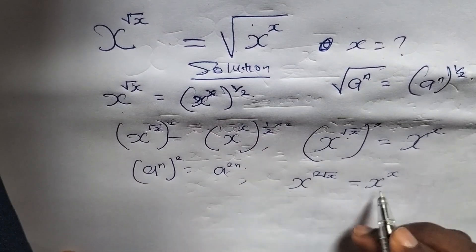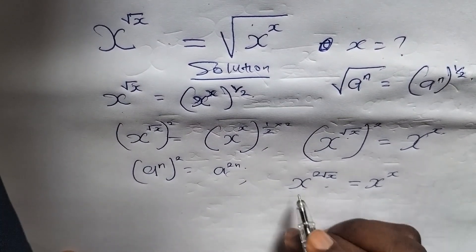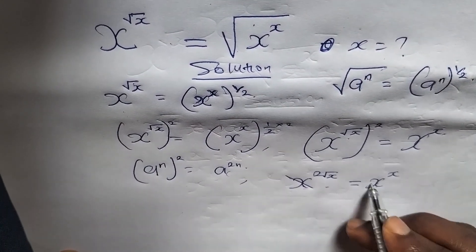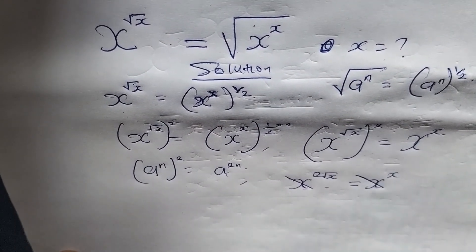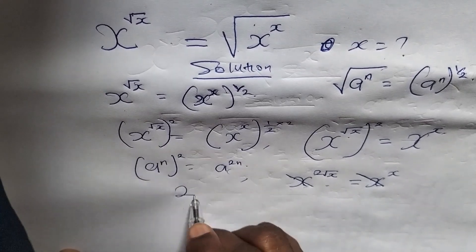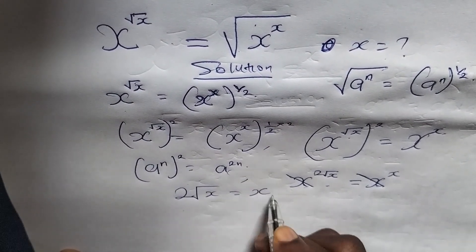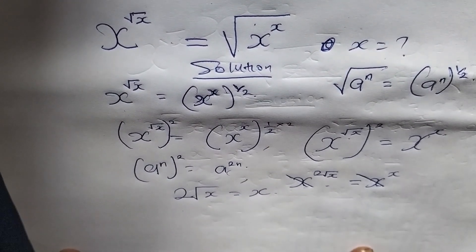So we are now having this. Since the base numbers are the same, we can easily strike them off. So we are now having 2 root of x is equals to x.